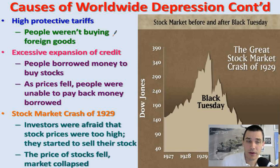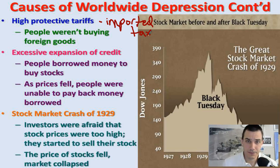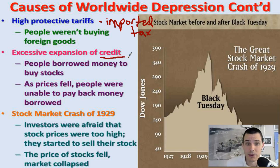Other causes of this depression: there were high tariffs in a lot of different places. A tariff is a tax on imported goods. We had these tariff wars where all sides were increasing their tariffs, which increases the tax on trade and discourages trade. Credit was increasing — people were borrowing too much money to buy stocks, and eventually the market crashed. It's known as the stock market crash of 1929. Investors were afraid prices were too high, they started to sell, there was a big panic known as Black Tuesday — the stock market collapsed.